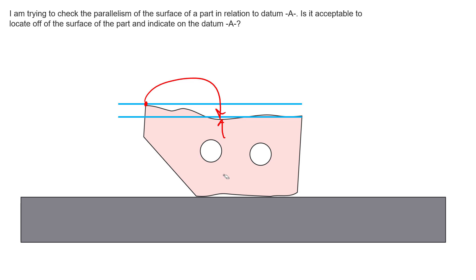So short answer to the question is no, you cannot reverse the inspection. You cannot locate off the surface of the part and then indicate off datum A. This is not the same inspection, it'll give you false results. So hopefully that helps clarify things for you. And thanks again for tuning in.